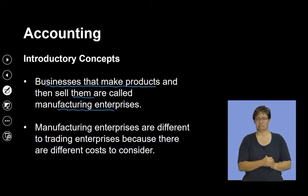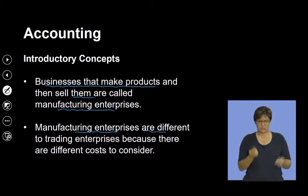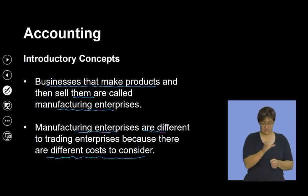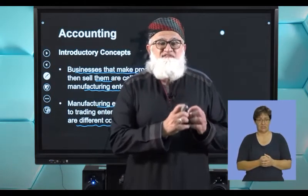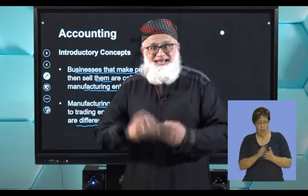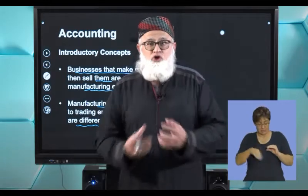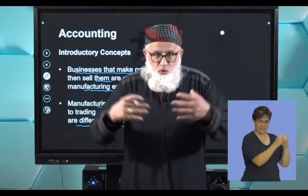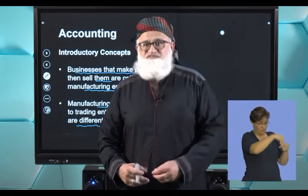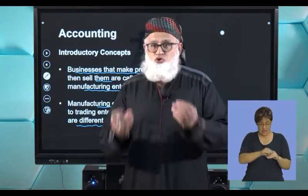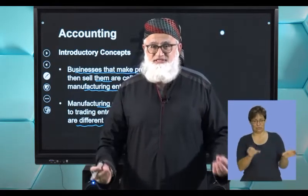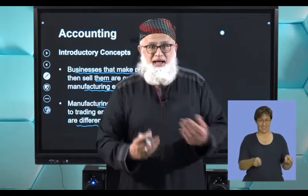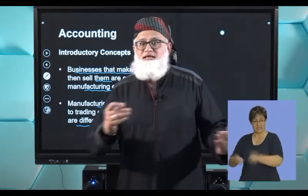Manufacturing enterprises are different because they have different costs to consider. Your trading concern buys a finished product, adds a markup to it, and sells the product. However, your manufacturing concern produces the item with all its cost components, and thereafter adds a markup and sells it. You can clearly see a distinct difference between an enterprise dealing with buying and selling and a manufacturing enterprise.